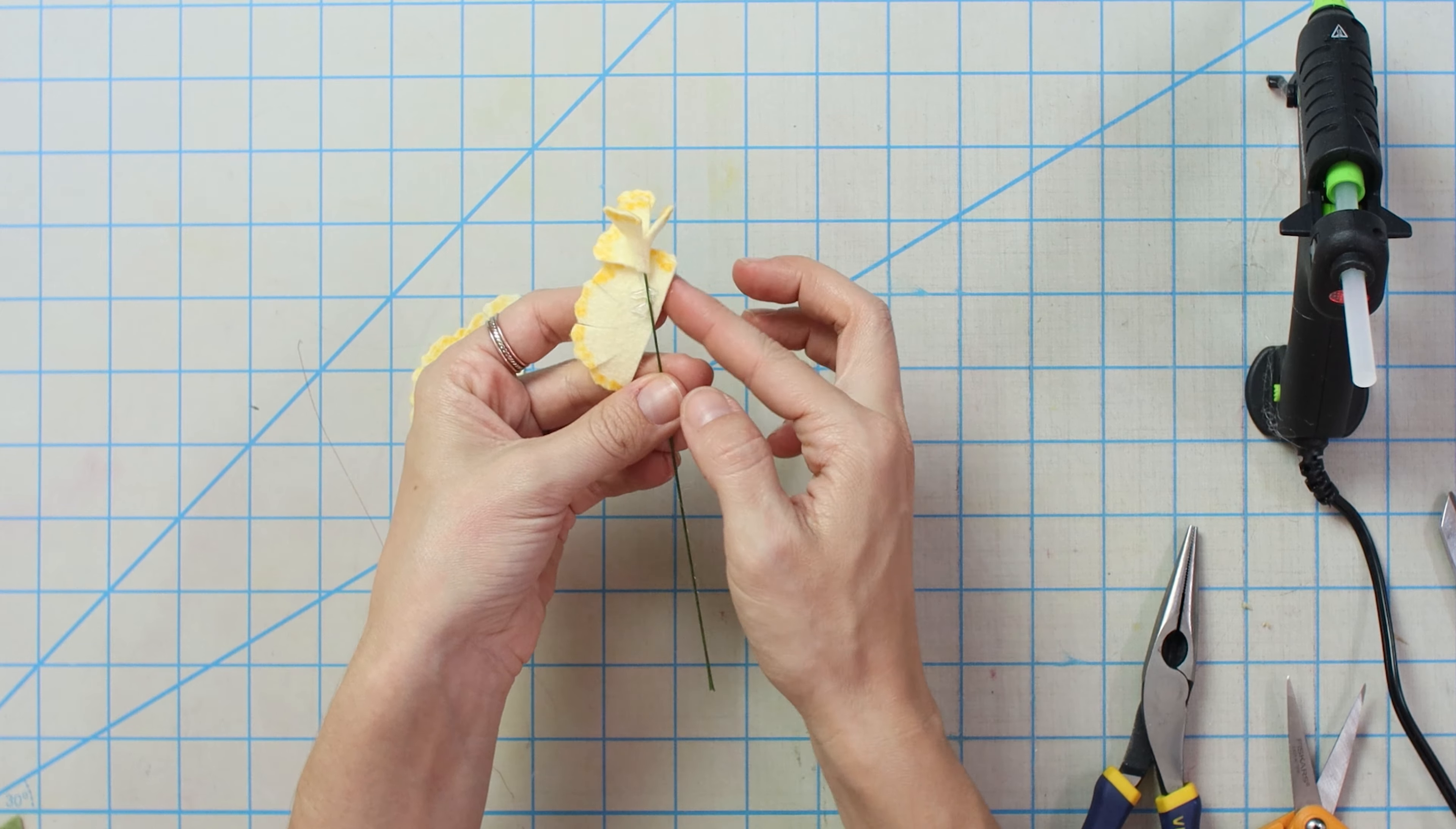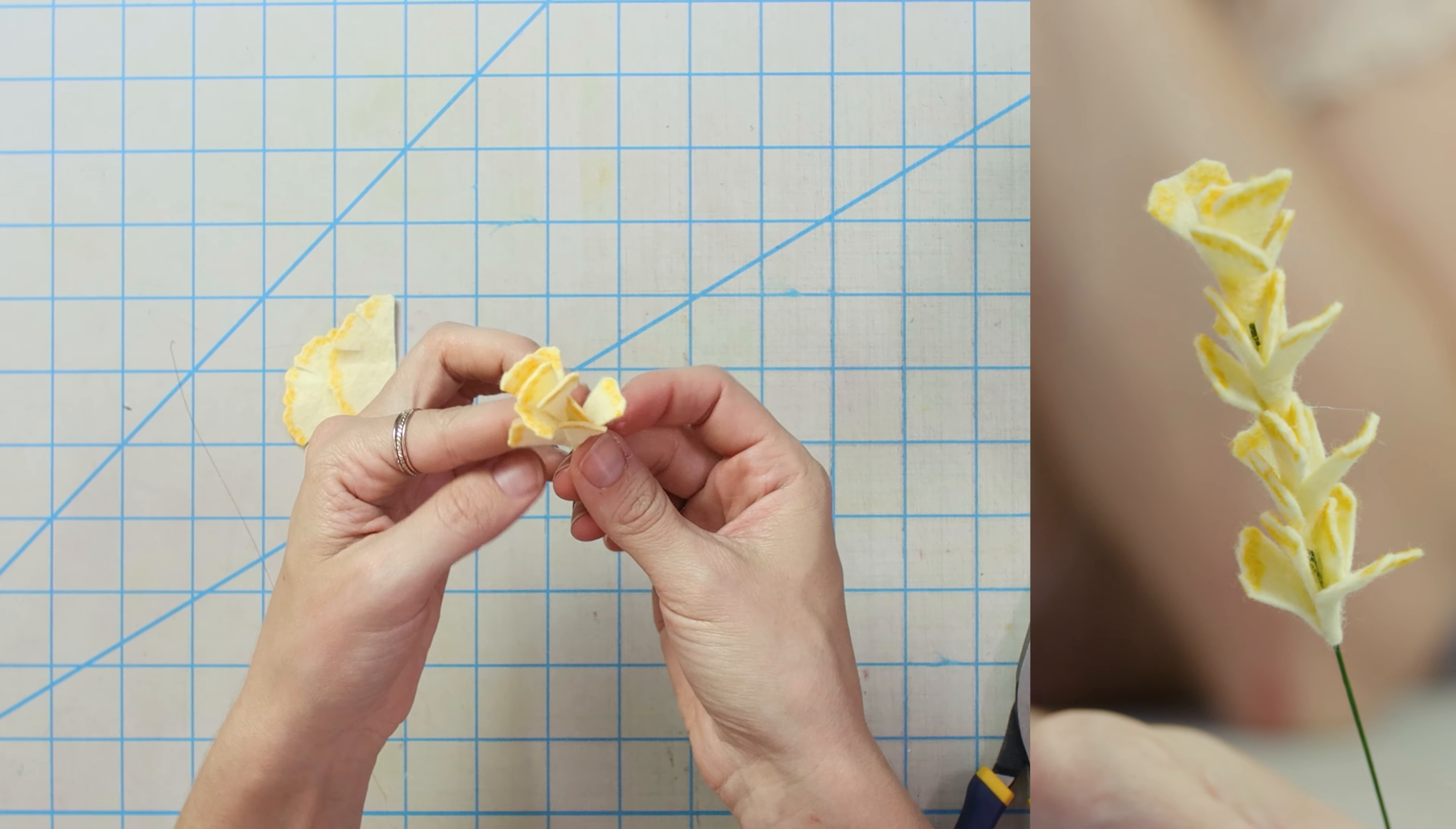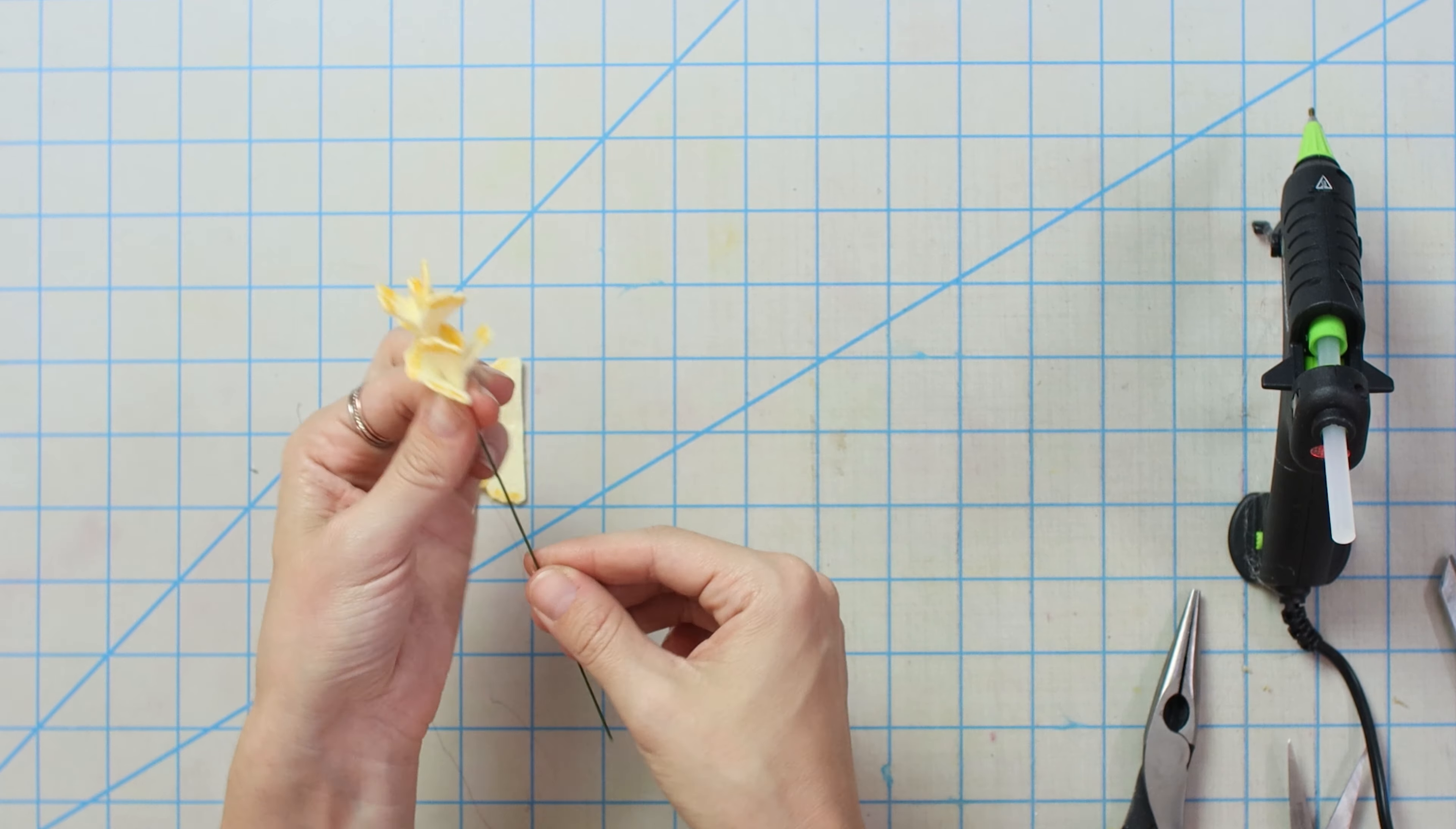So we're going to make these little floofy parts of our flower. It's a very technical flower term, floof part, so make sure you remember that. Okay, so we're going to do the same thing. Put some glue on it and this time we're going to go a little bit lower and then wrap it around. So it's going to be like a long flower.